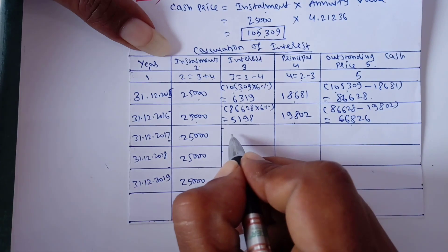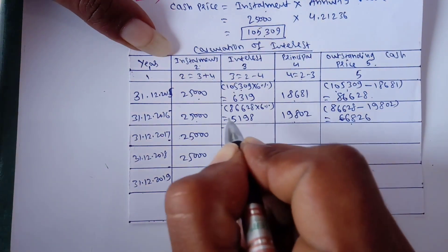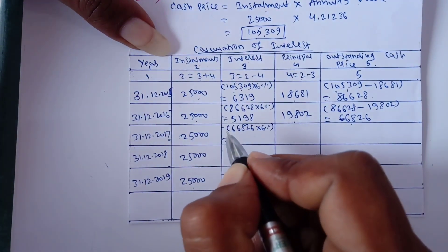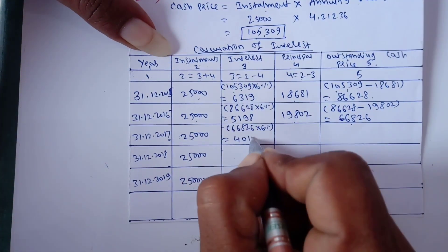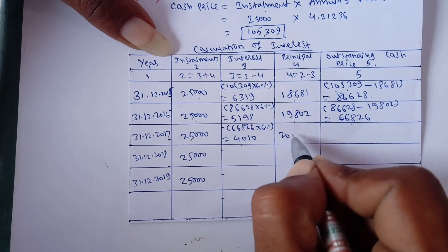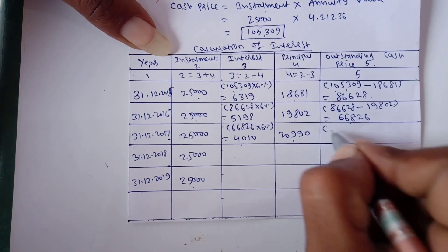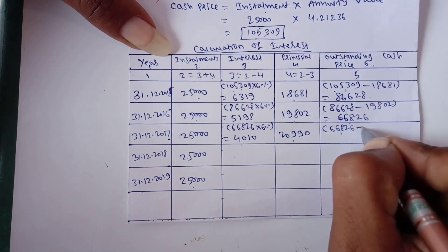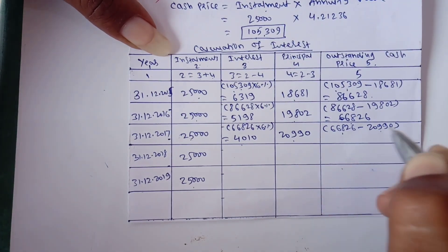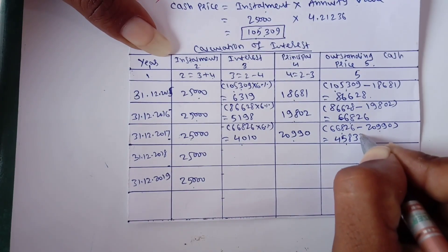For 31-12-2017: Interest on outstanding cash price of Rs.66,826 at 6% = Rs.4,010. Principal = Rs.25,000 − Rs.4,010 = Rs.20,990. Outstanding cash price = Rs.66,826 − Rs.20,990 = Rs.45,836.